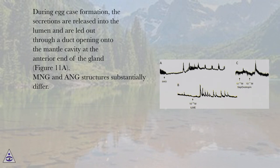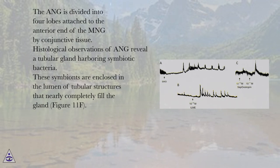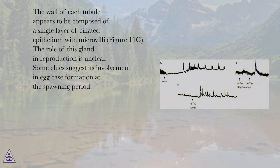MG and AG structures substantially differ. The AG is divided into four lobes attached to the anterior end of the MG by conjunctive tissue. Histological observations of AG reveal a tubular gland harboring symbiotic bacteria. These symbionts are enclosed in the lumen of tubular structures that nearly completely fill the gland, figure 11f. The wall of each tubule appears to be composed of a single layer of ciliated epithelium with microvilli, figure 11g.